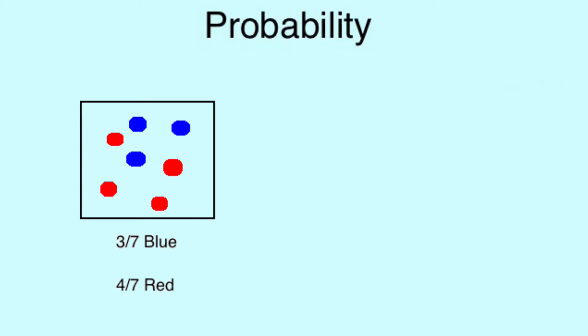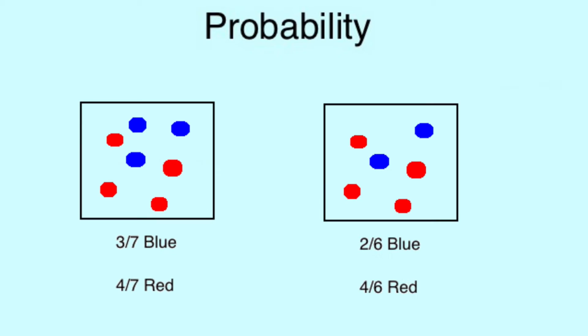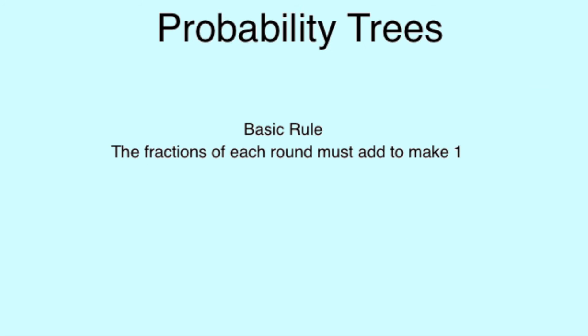If, however, we remove one blue ball for example, then not only do we have 6 balls left to choose from, but the odds of each have changed too. An important rule to remember with Probability Trees is that our fractions for each round must add up to 1.